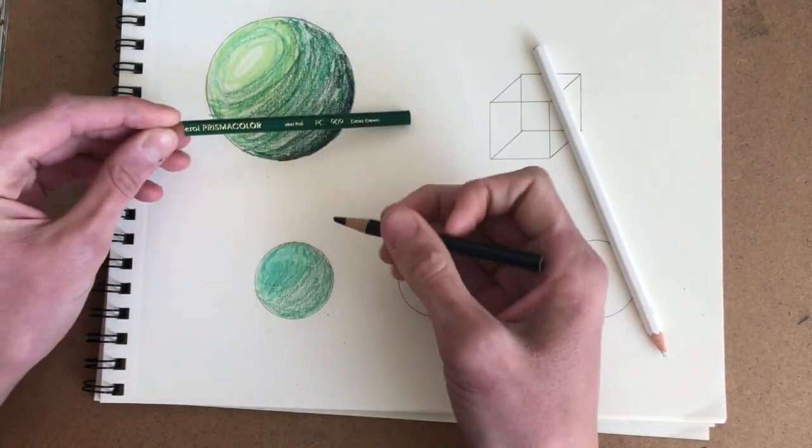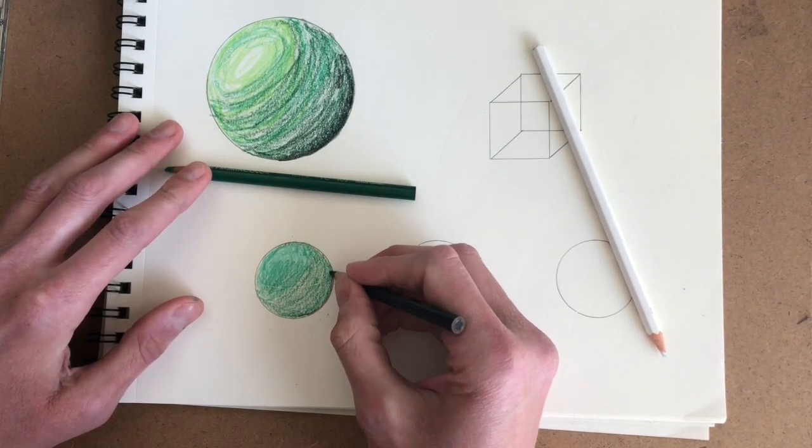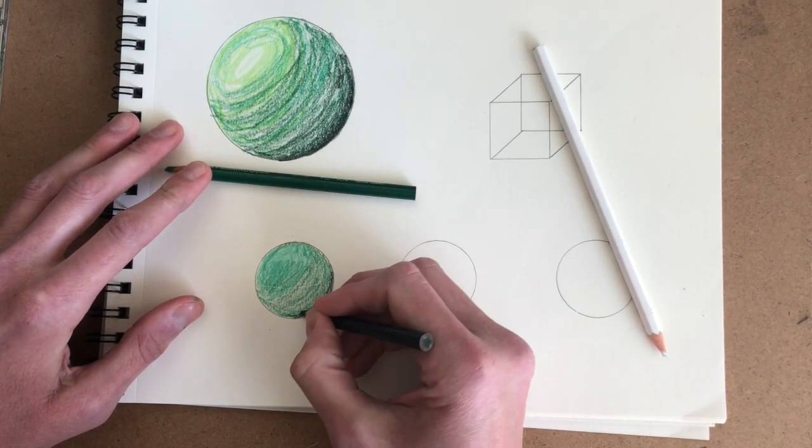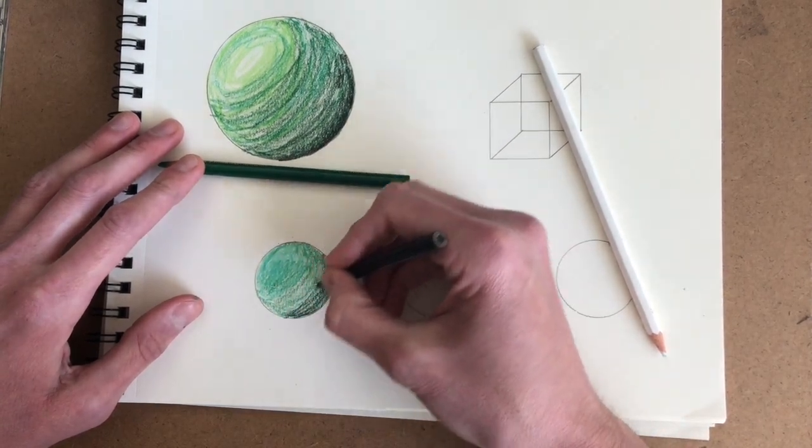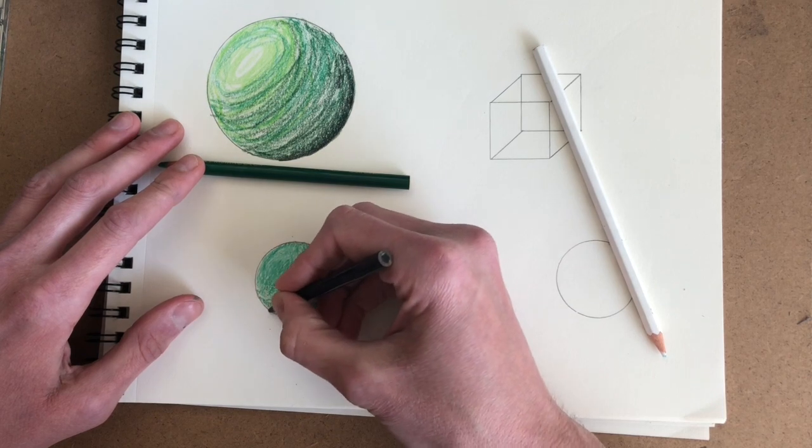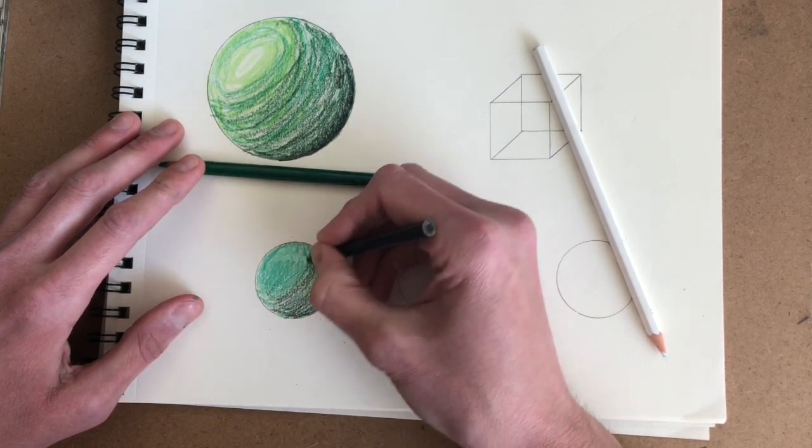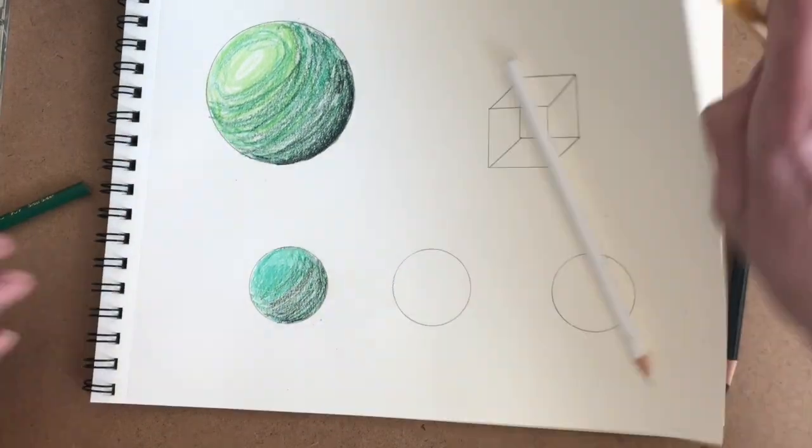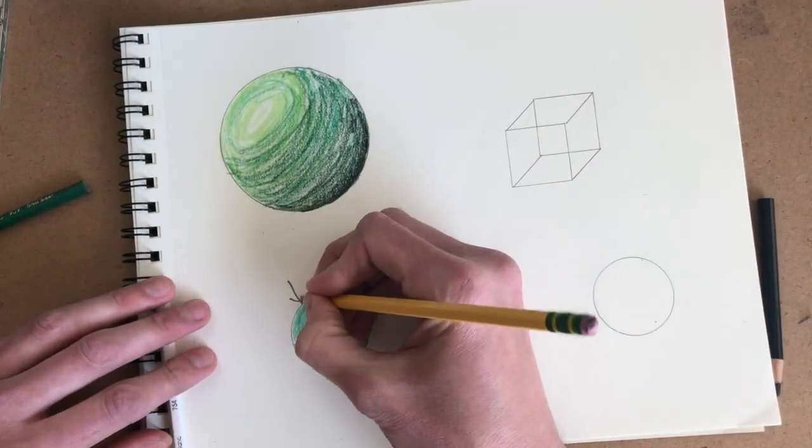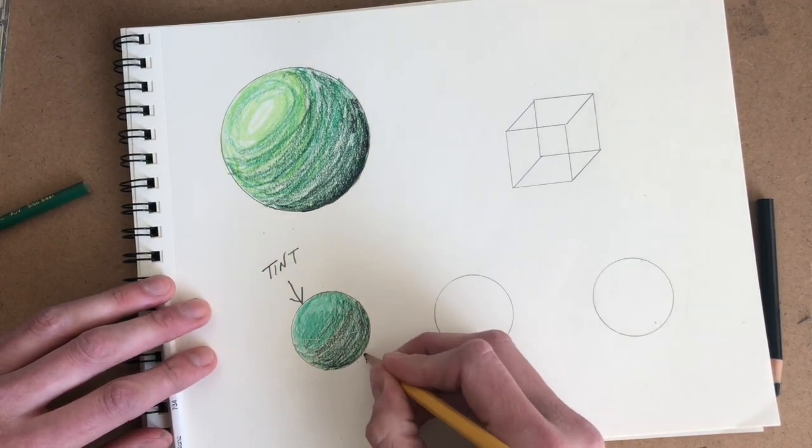And then to create a shade, we take the hue or the main color and we add some black to it to make it darker. And so where the shadow is, I'll go over my green with a little bit of black. So we have our tint and our shade.